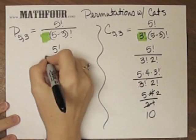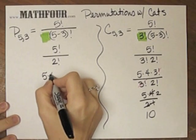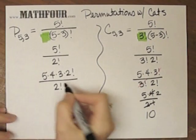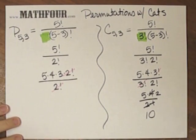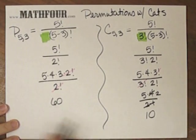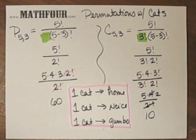This piece isn't there. Doing the arithmetic, I have five factorial over two factorial. This is five times four times three times two factorial over two factorial. Cancel those. Five times four is 20, times three is 60. So I have 60 different ways to choose those three cats to come home, go to my niece, or have for dinner.